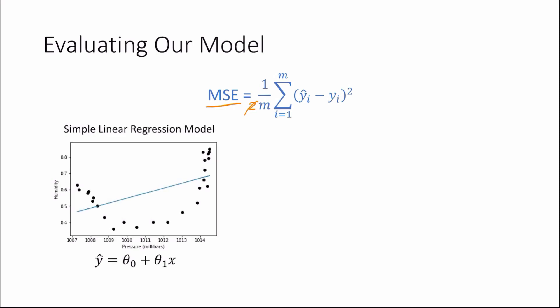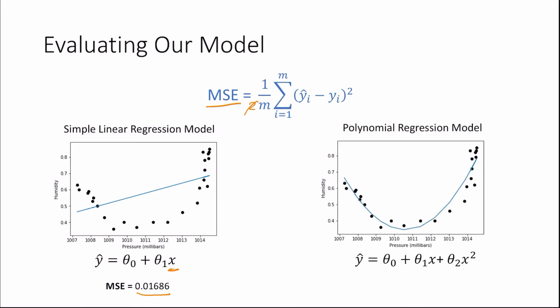So with a simple linear regression model, we can see visually that it doesn't fit our data well. And this is supported by a relatively high mean squared error of 0.01686. And with our polynomial regression model, where we added our pressure squared, we see that we get a much lower mean squared error of 0.00336.